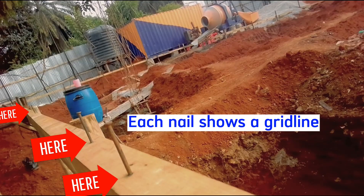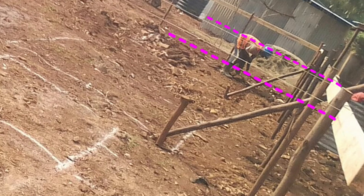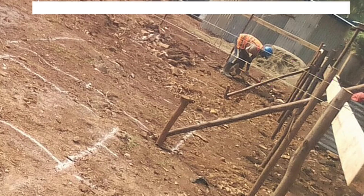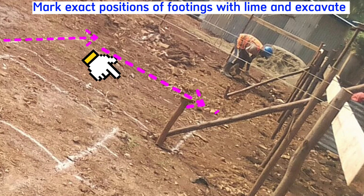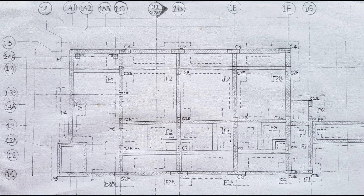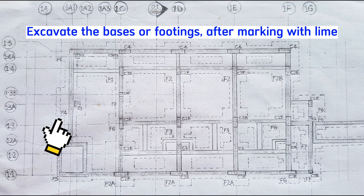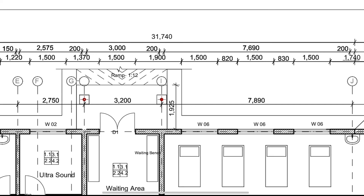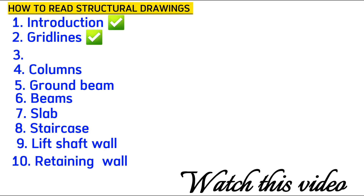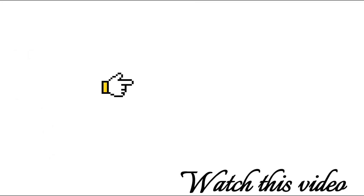We do the same for all grid lines visible on the drawing, marking them with nails on the timber piece — each nail represents a grid line. After tying all strings on their respective grid line positions, we mark the exact positions where the footings will be, using lime to mark those positions. We then excavate for all the pads: F4, F1, F2, F2B, F7, and many others. That's the end of this video about understanding grid lines in a structural drawing and how to set out a building. The next video covers how to read structural drawings for pads and footings.